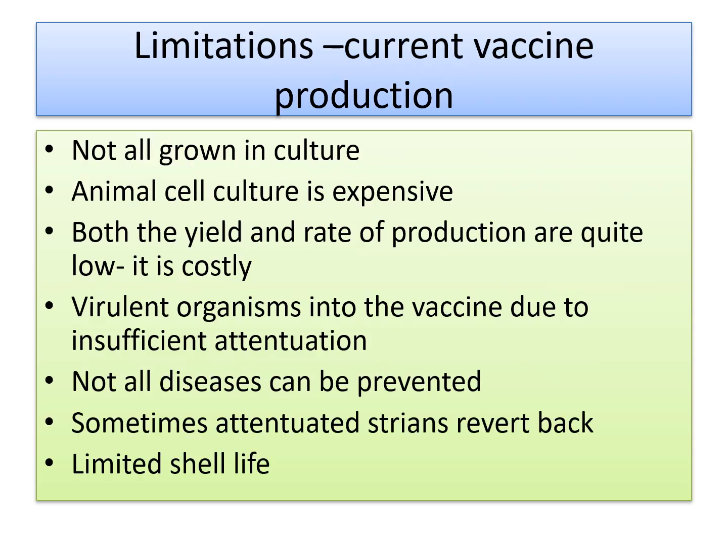What are the drawbacks in the current vaccine production? The main important problem is that not all microbial cultures can be grown in the lab. Likewise, the animal cell culture maintained to grow the cells is very expensive, so the yield and rate of production is quite low, making it not cost-effective. Also, the virulent organisms for which we are preparing vaccines sometimes become virulent again because of insufficient attenuation.